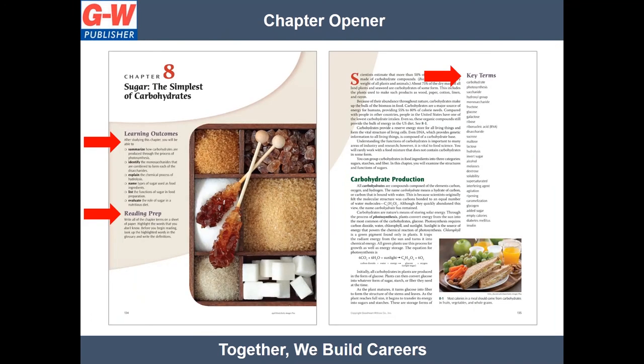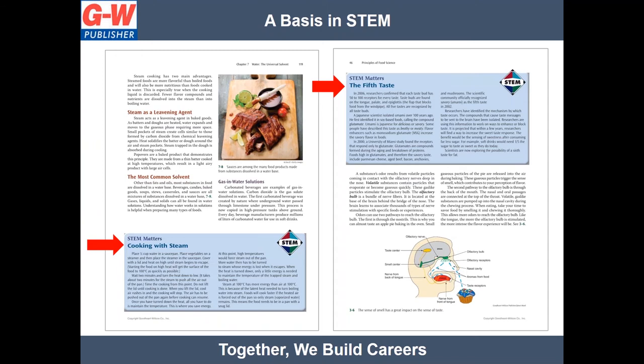Each chapter begins with a focus on learning objectives to clearly identify the knowledge and skills to be obtained when the chapter is completed. Reading Prep provides quick, easy activities to expand reading skills. Key Terms lists the key terms from the chapter. A variety of engaging, high-interest features are included throughout the text. For example, STEM Matters features highlight science, technology, engineering, and math tools and techniques used in nutrient analysis and food production and processing.